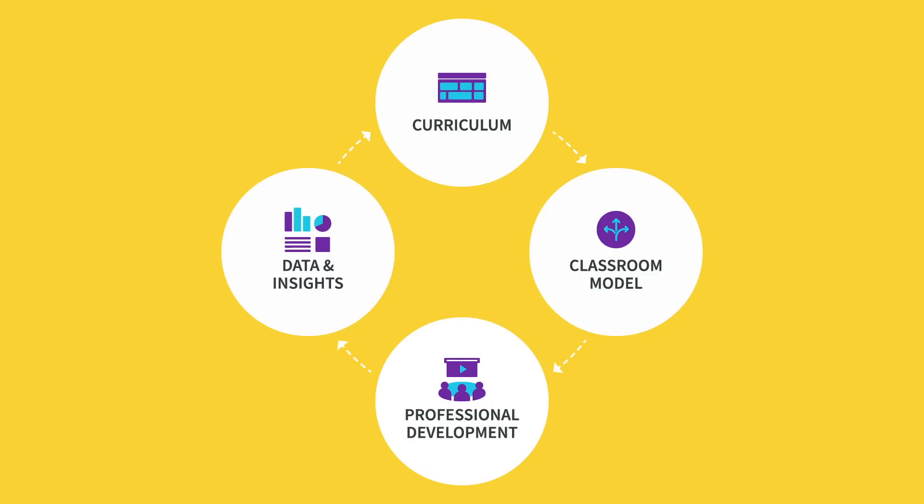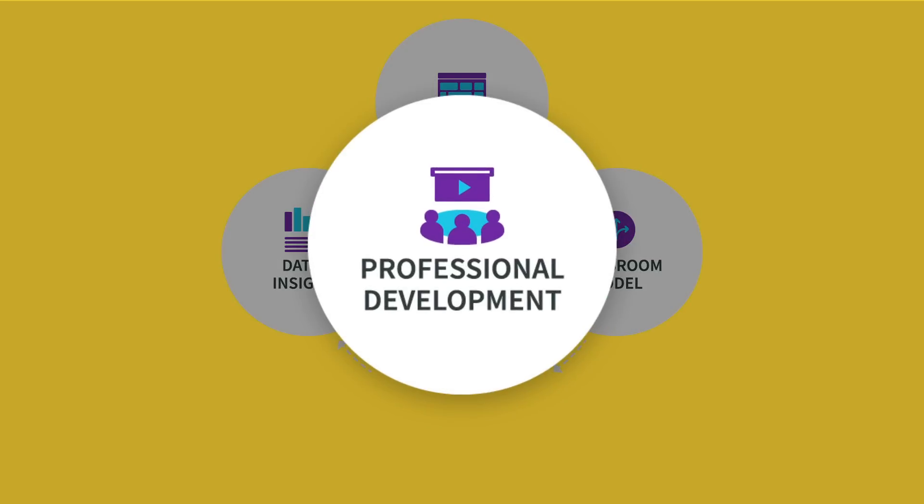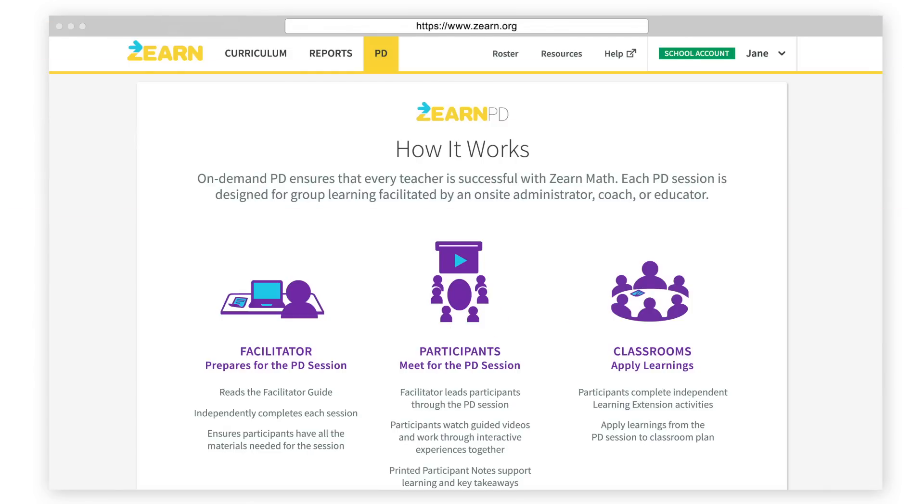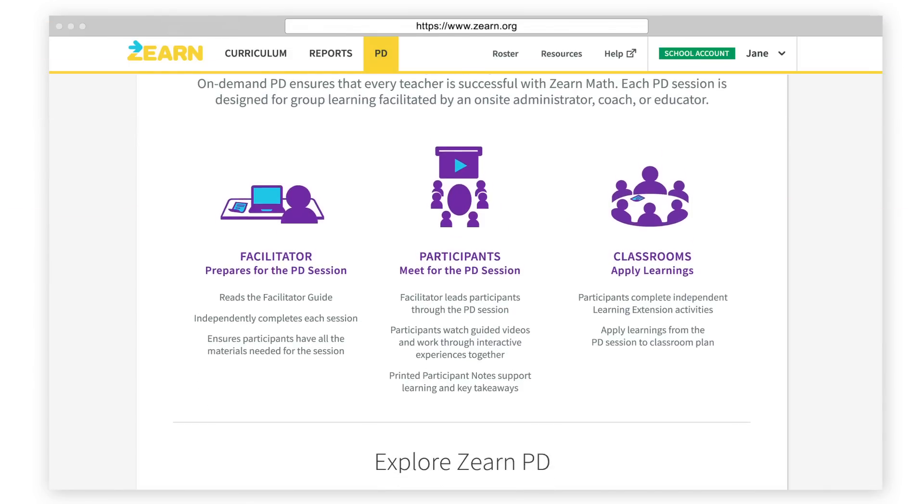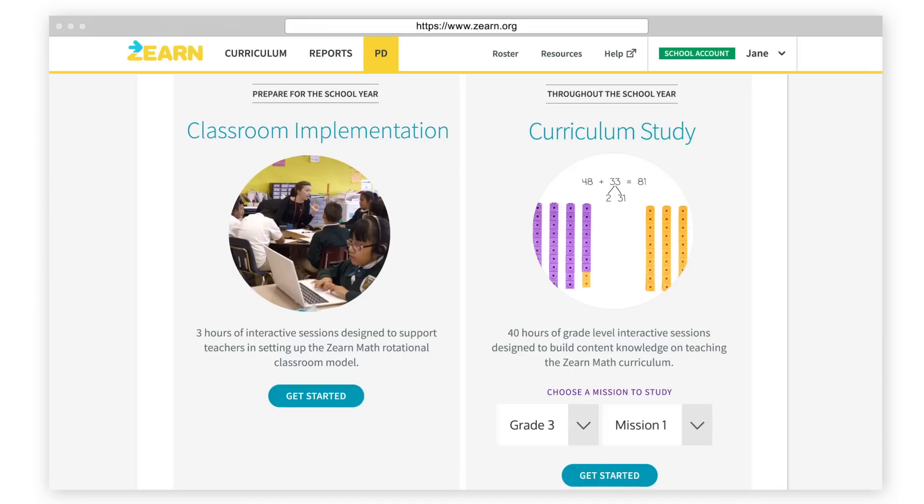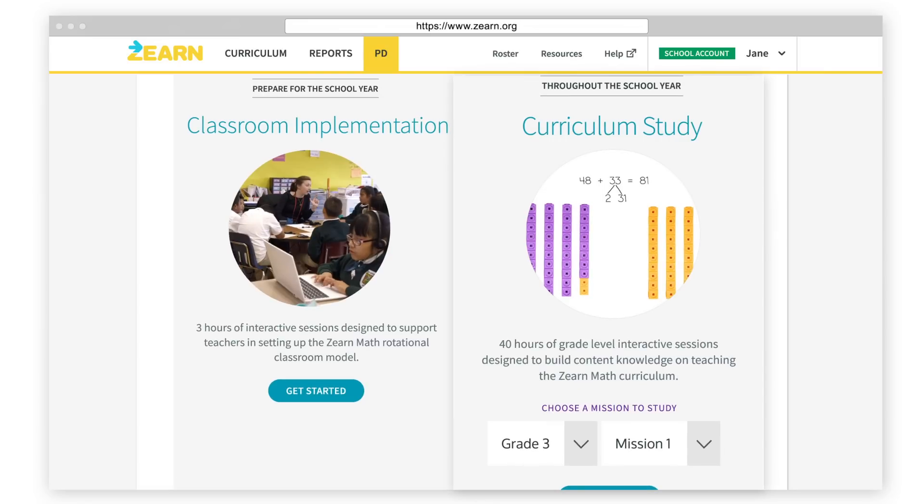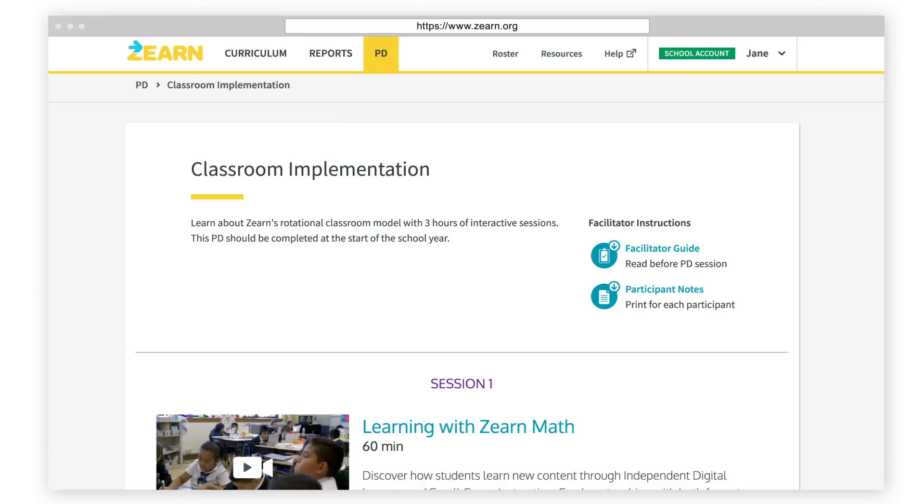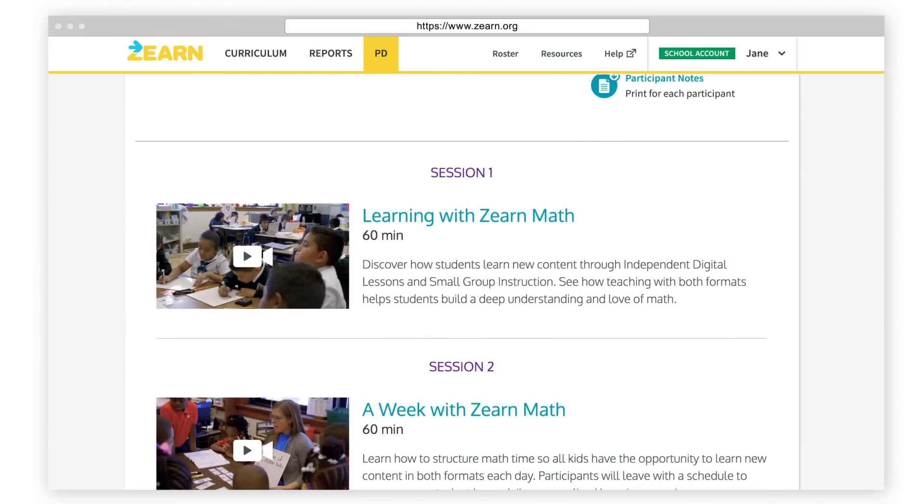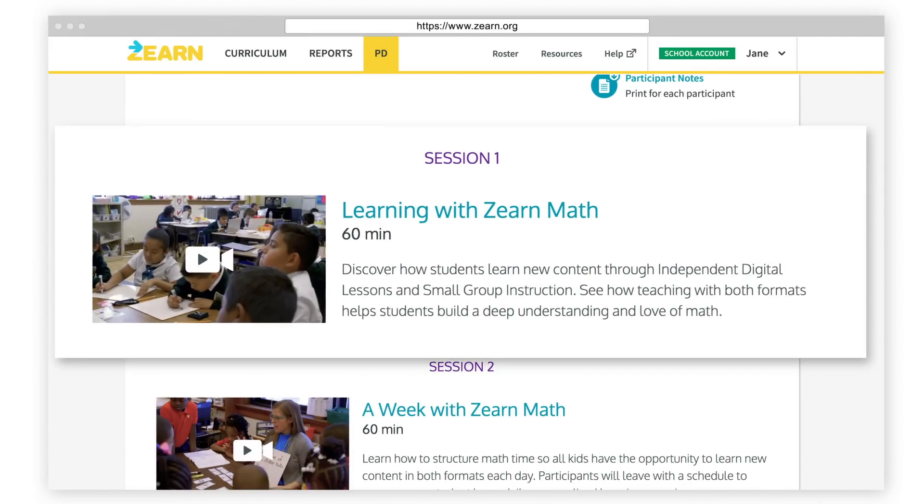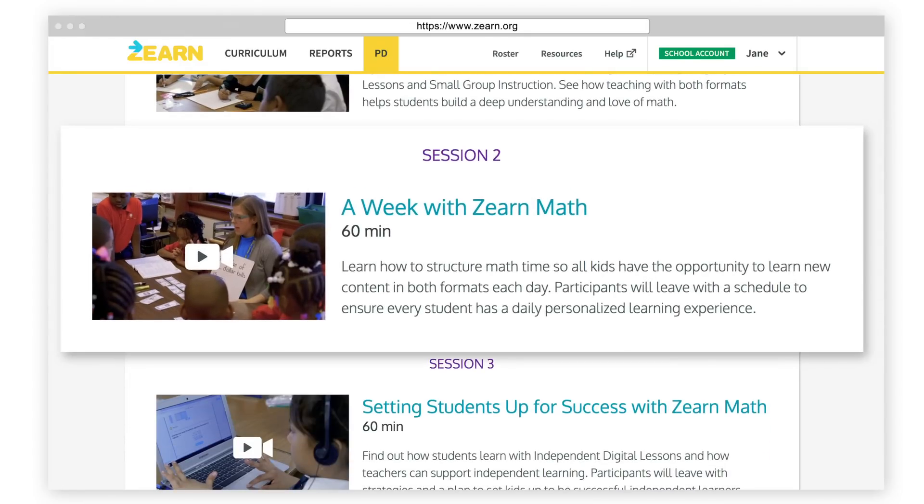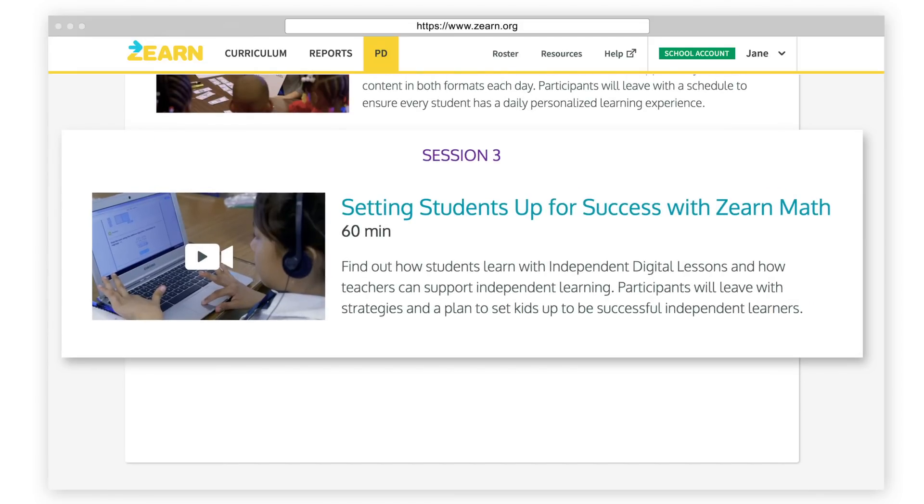Our integrated approach recognizes that teachers need more than high-quality curriculum, and we offer professional development that supports teachers as they deliver differentiated instruction each day. Zearn Math PD provides this support with up-front training to help classrooms get started, and a comprehensive PD that strengthens pedagogical content knowledge throughout the year. Classroom Implementation PD is a three-session series that provides an orientation to Zearn Math curricular materials and reports, implementing the rotational classroom model, and establishing classroom routines that support multi-modality learning.